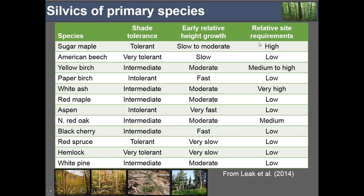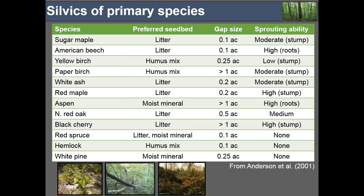Looking at the constituent species: sugar maple and white ash have very high site requirements. Sugar maple can exist across a wide range of sites, but reliably regenerating it and getting high yields really requires the highest quality sites. Beech and red maple have much broader ecological amplitude, creating challenges depending on the desired outcome. The natural dynamics of northern hardwood forests are really gap-scale and fine-scale, with frequent disturbances and occasional mesoscale events creating larger openings.